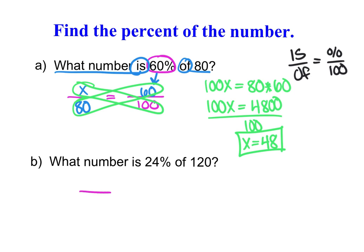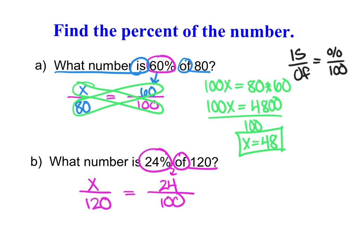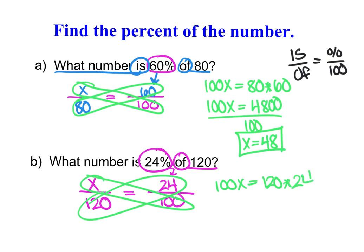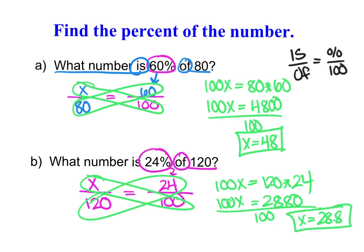For 'what number is 24% of 120': 24% goes above 100, 'of 120' puts 120 in the denominator, and x goes in the numerator. Cross-multiplying gives 100x = 120 × 24 = 2880. Dividing by 100 gives x = 28.8. So 28.8 is 24% of 120.